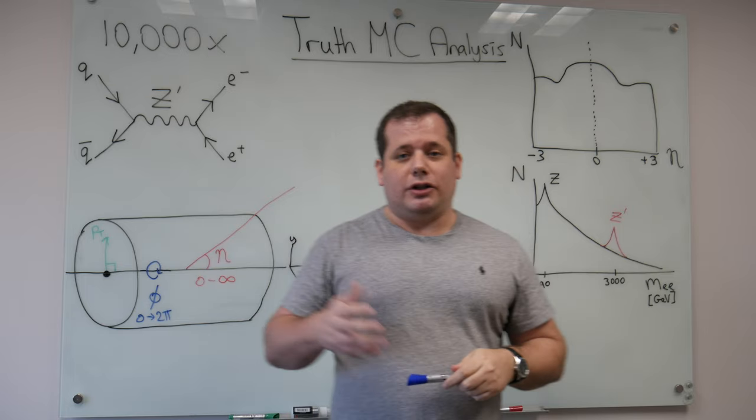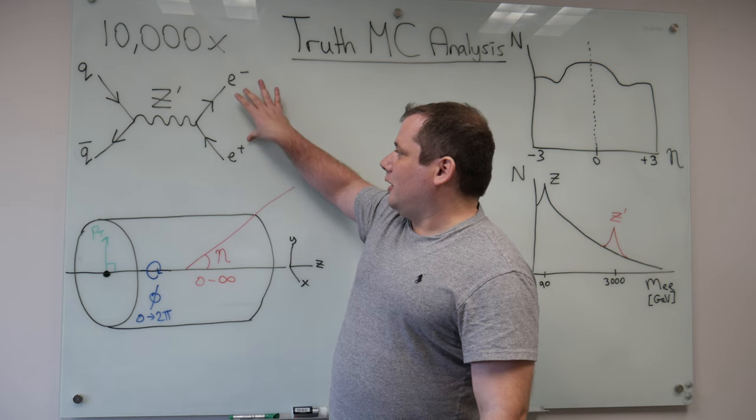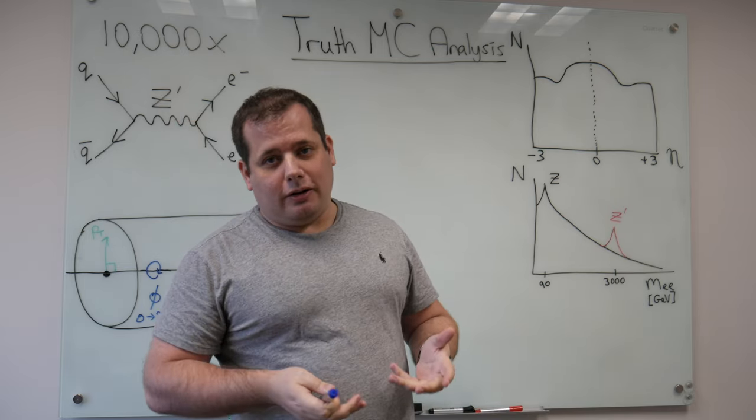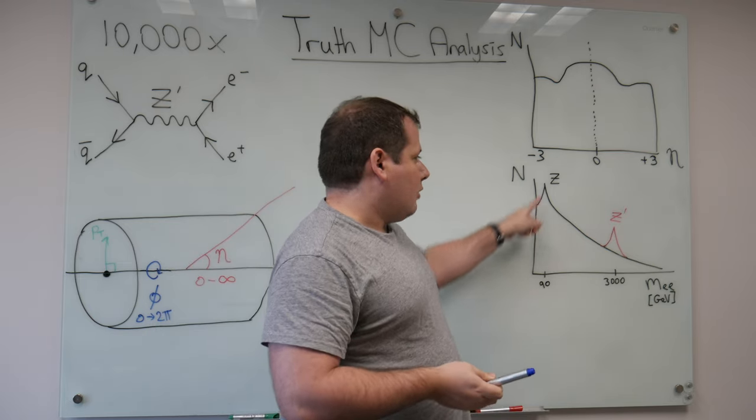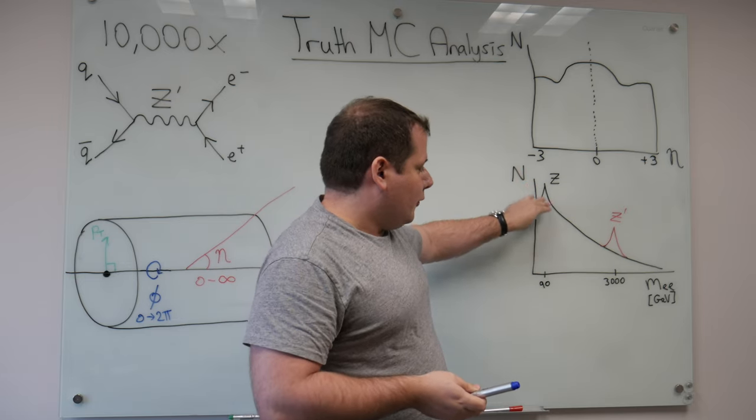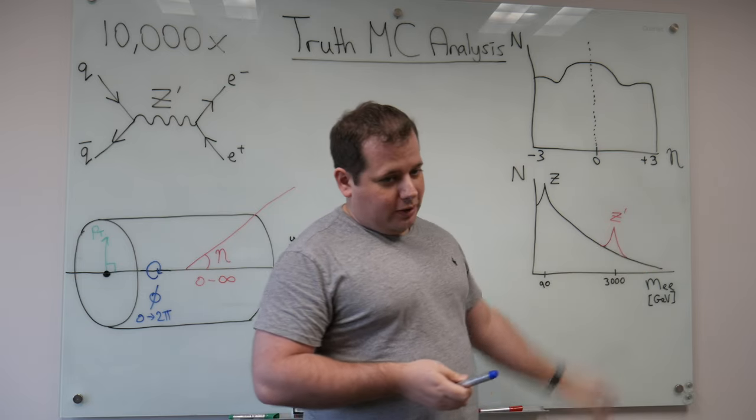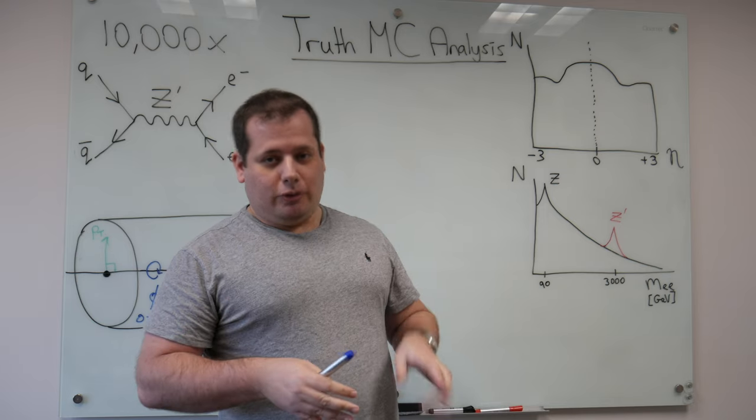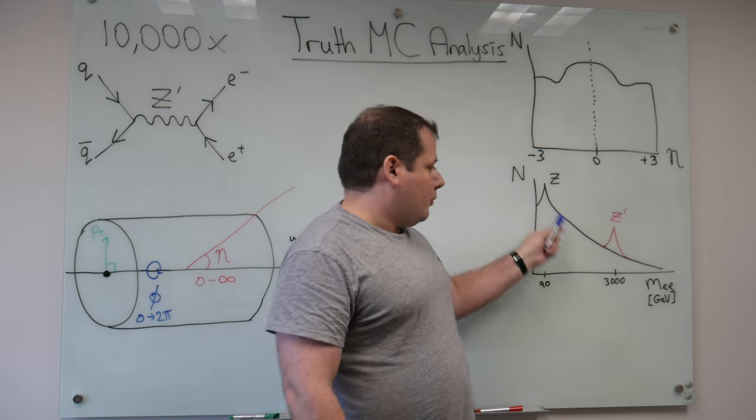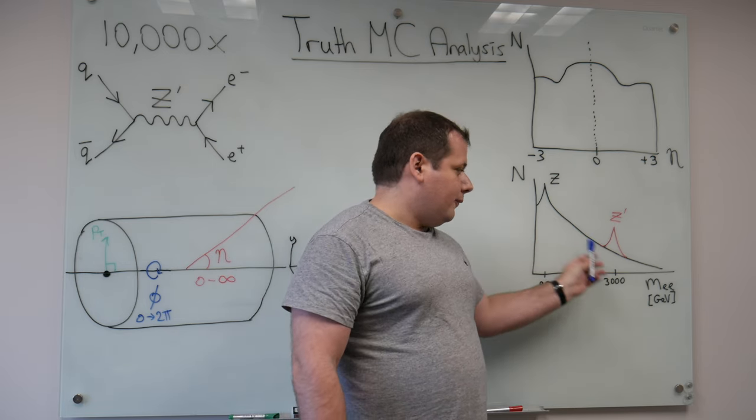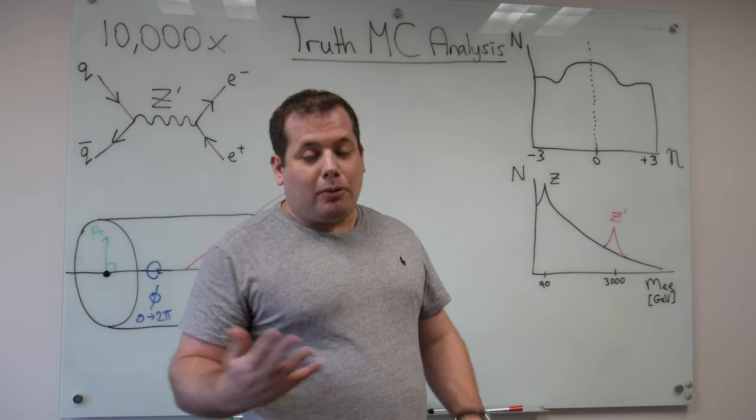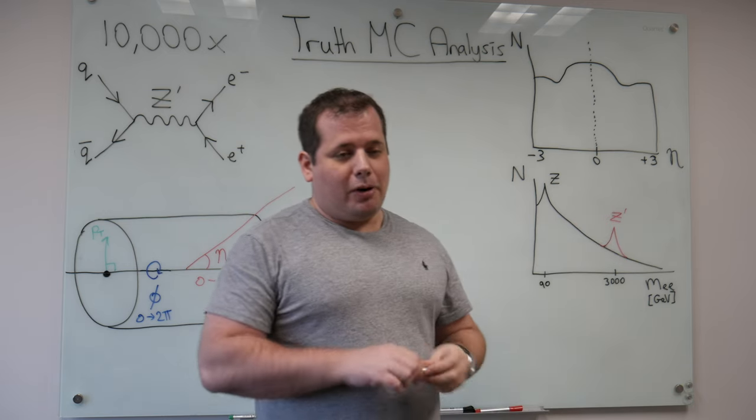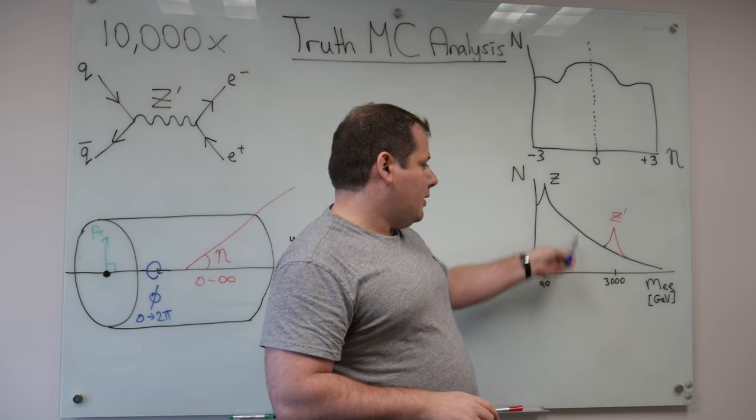One of the most sensitive variables when we're searching for new physics is the mass distribution, so adding back together the energy of these two electrons together with their direction and figuring out what was the mass of the particle they came from. So the standard model gives us a prediction of what we would see. You have this peak, this resonance around the Z mass which is around 90 GeV, and then you have a falling distribution as you get to higher and higher masses. This is what the standard model predicts. But if the Z' was present, and particularly in this case if it was present at 3 TeV, then you would see a bump in this distribution, another resonance where this Z' particle existed.